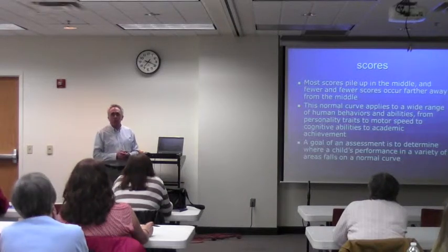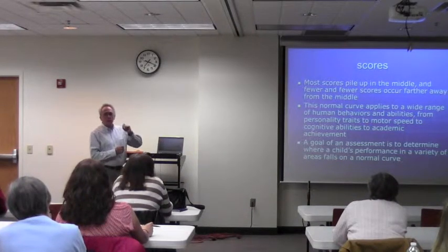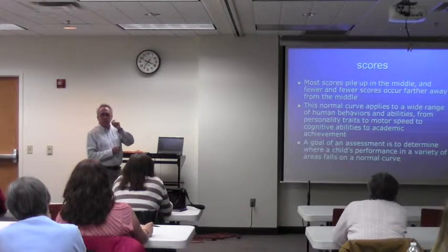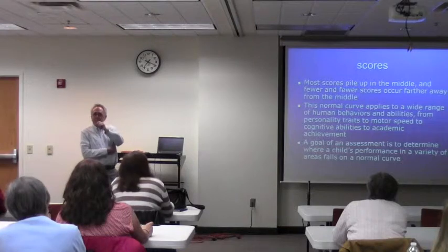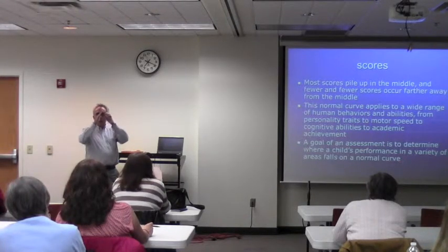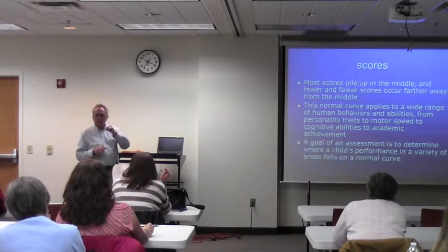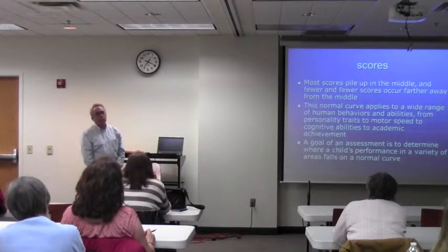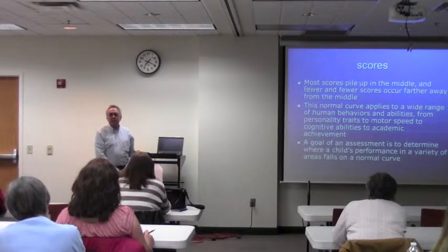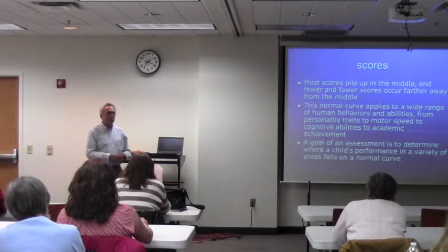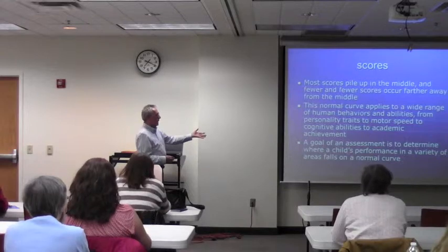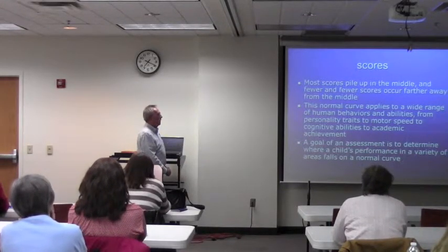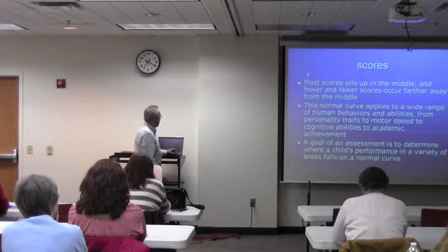Whenever a teacher answers a questionnaire indicating that a student is inattentive and off-task all the time, and answers a bunch of other items, you score it and plot it on a graph with columns by age — for example, eight-year-olds. If the score is really high, that means compared to most eight-year-olds, that student is really inattentive. So even a questionnaire is norm-referenced. The goal of the assessment is to find out where a child's performance falls in a variety of areas compared to the norm.